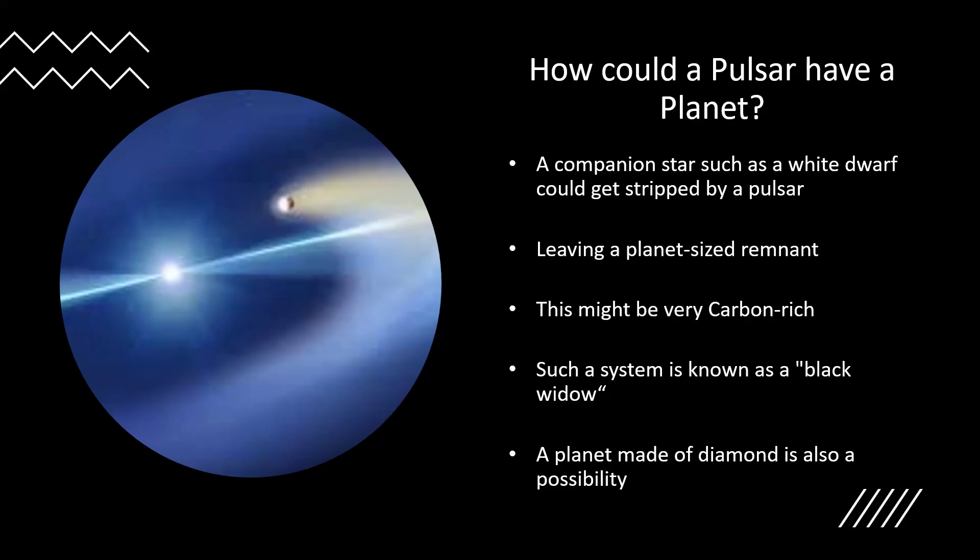You might even be in the situation where the companion star could get stripped of its outer layers by the energy from the pulsar or indeed from the supernova, and that could leave a planet-sized remnant behind. Now that might be very much rich in carbon, especially if it came from a white dwarf star. Most white dwarf stars originate from stars a little heavier than the sun, and as a result they create a core where they have fused helium into carbon in the center and some oxygen as well. Such a system could be described as a black widow, or indeed you could describe it as a planet made of diamond because the carbon is likely to crystallize in the immense pressures inside such a massive object as the core of a white dwarf.